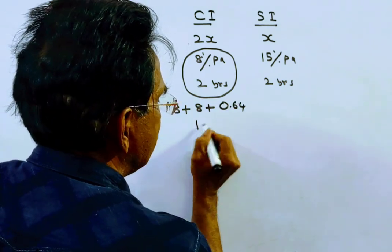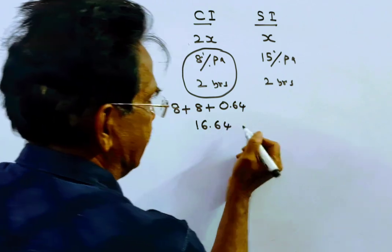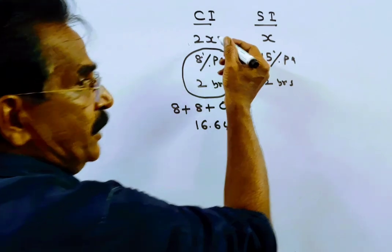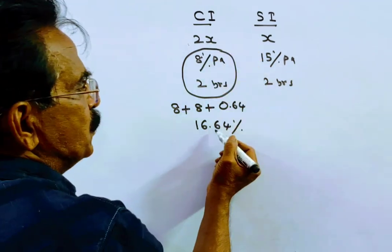This is 16.64% for 2 years. Then the compound interest becomes PTR by 100.